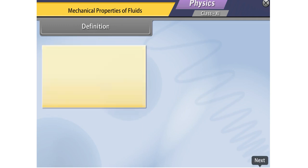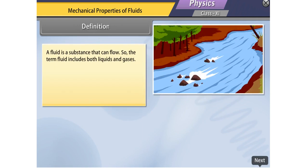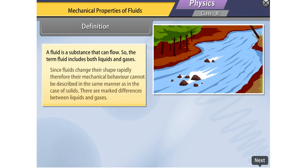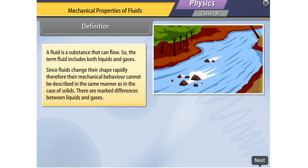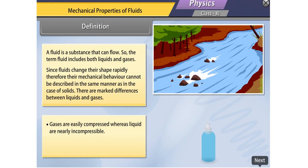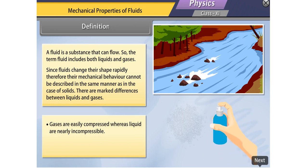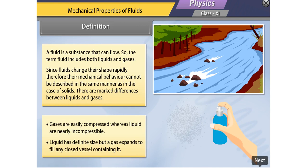A fluid is a substance that can flow, so the term fluid includes both liquids and gases. Since fluids change their shape rapidly, their mechanical behavior cannot be described in the same manner as in the case of solids. There are marked differences between liquids and gases. Gases are easily compressed, whereas liquids are nearly incompressible. A liquid has a definite size, but a gas expands to fill any closed vessel containing it.